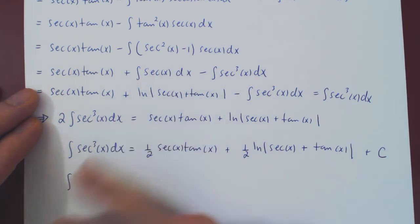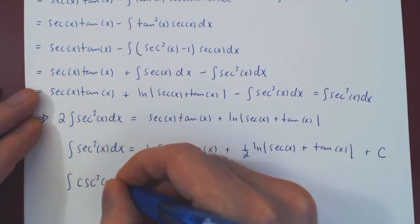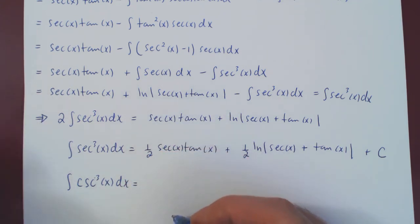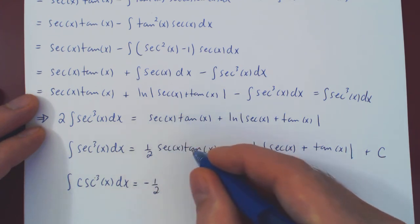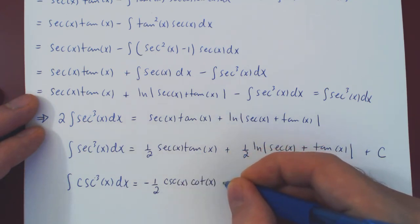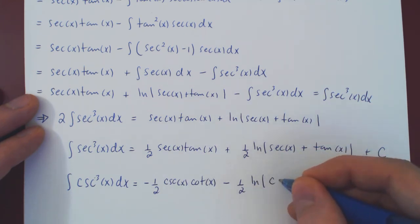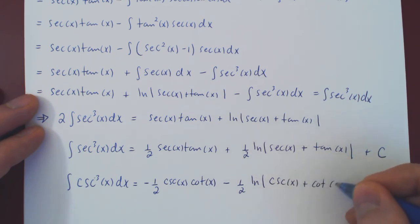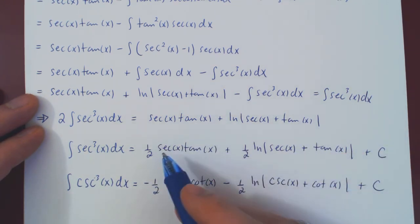I'll leave that as an exercise, but if you do it, you will arrive at: the integral of cosecant³(x) dx equals negative one-half cosecant(x) cotangent(x), minus one-half ln|cosecant(x) + cotangent(x)|, plus C. It's the same structure, except you get negatives, replacing secants by cosecants and tangents by cotangents.